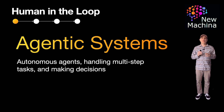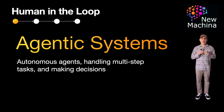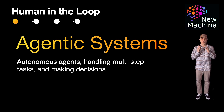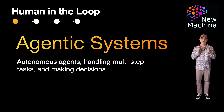Before we talk about human-in-the-loop agentic systems, let's first define agentic systems. Agentic systems are LLM-driven workflows where autonomous agents handle multi-step tasks and make decisions. These agents can take in inputs, reason through actions, and coordinate outputs across tools or APIs. In simple terms, agentic systems are like digital workers that can operate on their own, but sometimes they need human help.